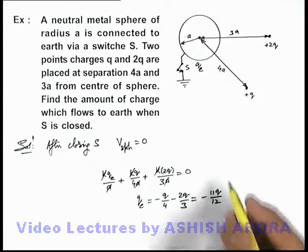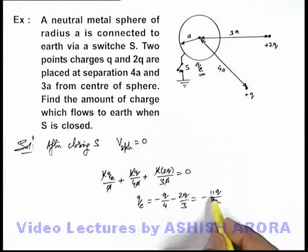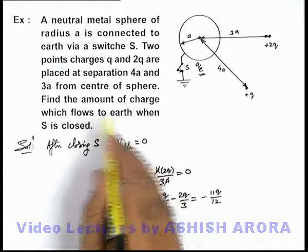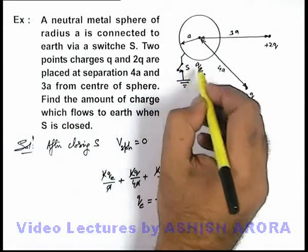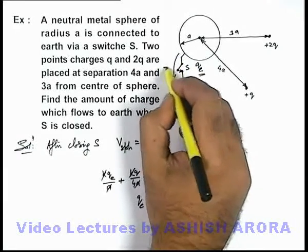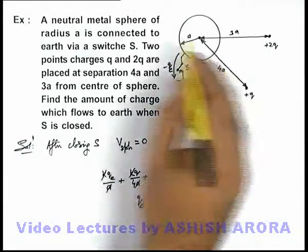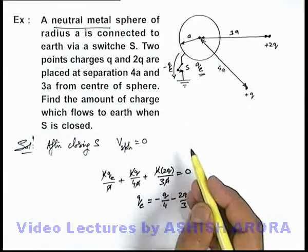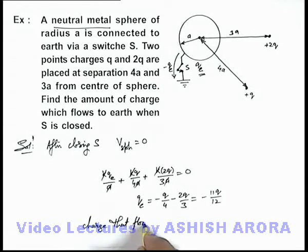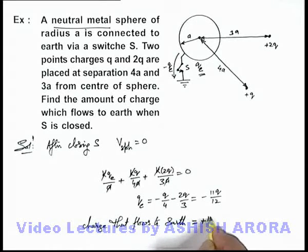And we can say as q_e is the charge on the sphere which is minus 11q by 12, and we are required to find the amount of charge which flows to earth. So if q_e is the charge supplied by earth onto the sphere, so from the sphere a charge minus q_e has flown because initially we are given that it was a neutral metal sphere. So we can write that the amount of charge that flows to earth can be written as plus 11q by 12, that will be the answer to this problem.